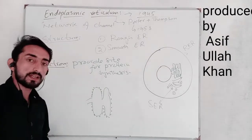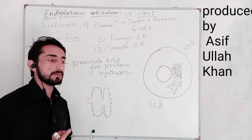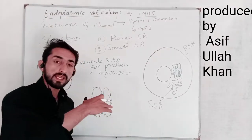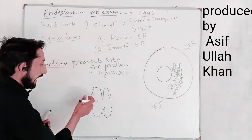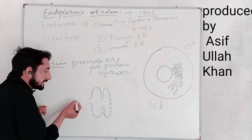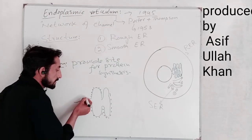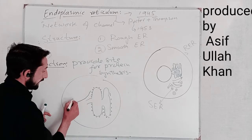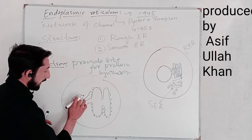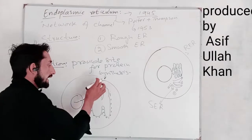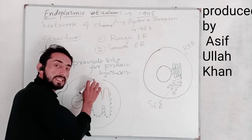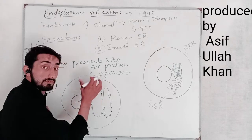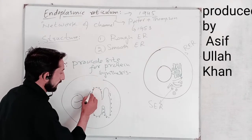When transcription is completed — transcription being the formation of messenger RNA, the copying of DNA — this messenger RNA comes out to the cytoplasm through the nuclear pores. It then gets assembled on the rough endoplasmic reticulum. The ribosomes assembled on the rough ER use this mRNA to build polypeptide chains, providing the site for protein synthesis.